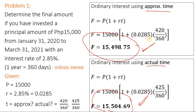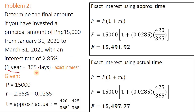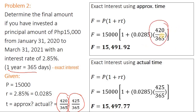I also worked this example with the same given values, but with one year now defined as 365 days. Notice that the time is written with a denominator of 365 days, for both approximate time and actual time solutions. You should end up with the following final answers.